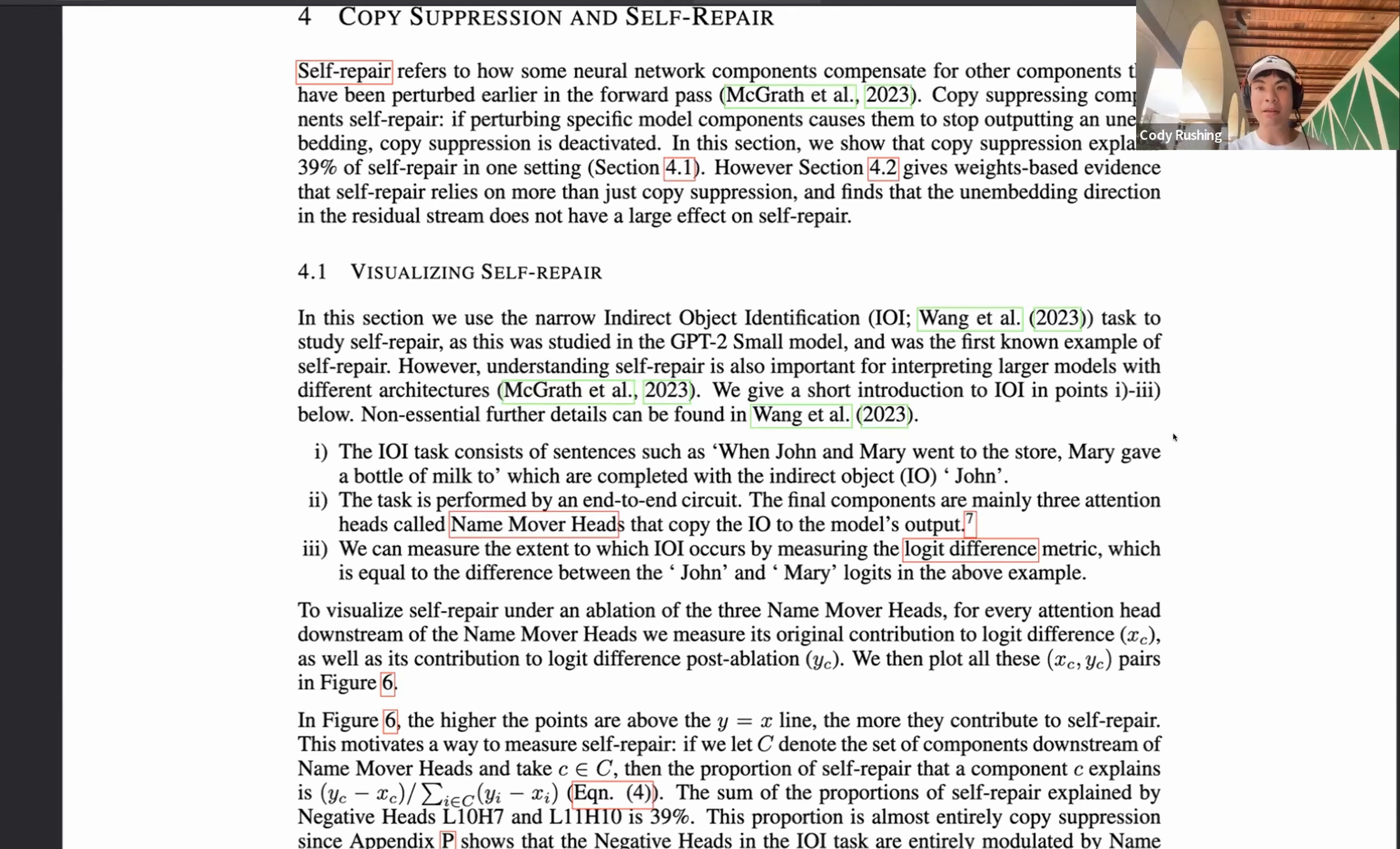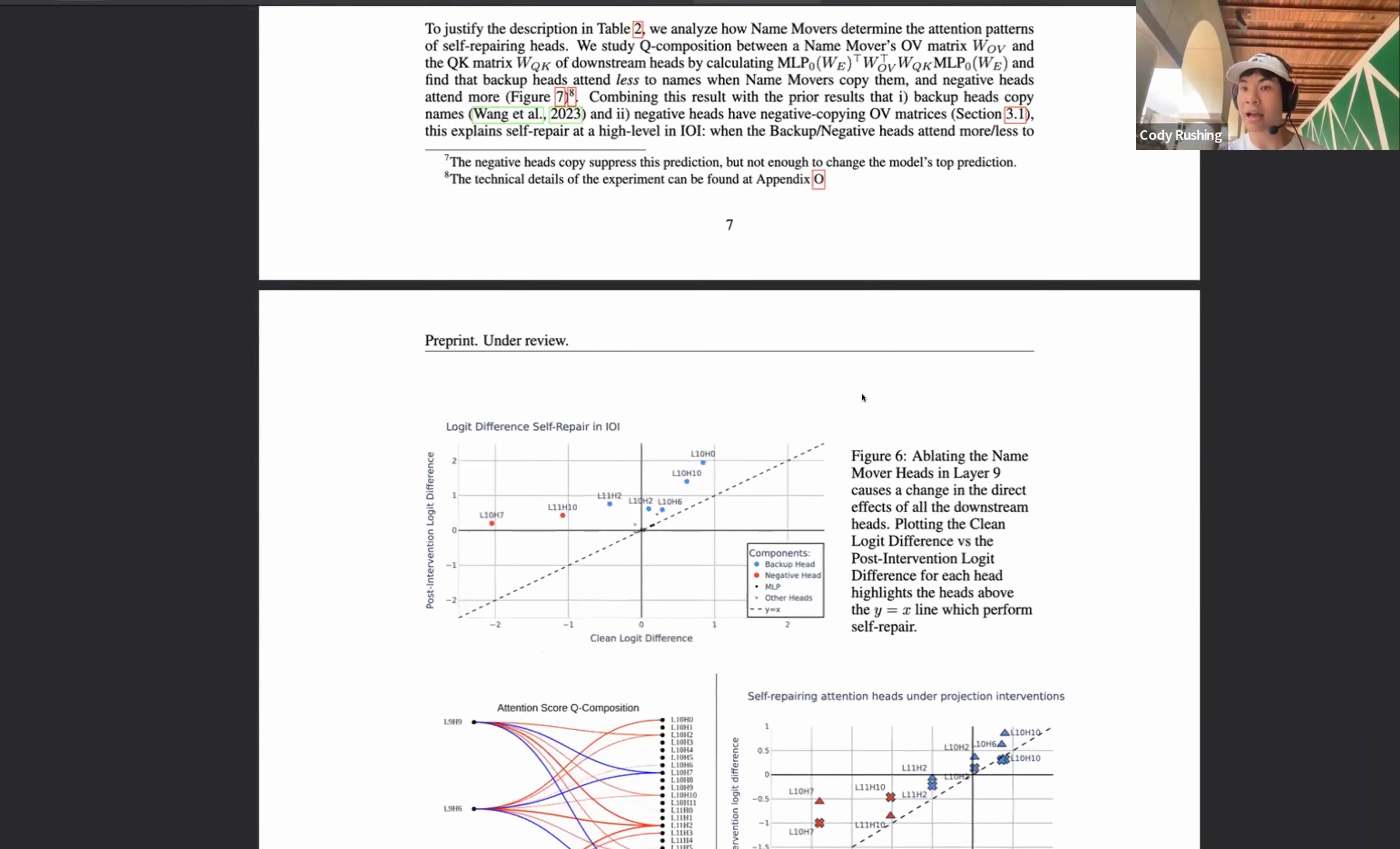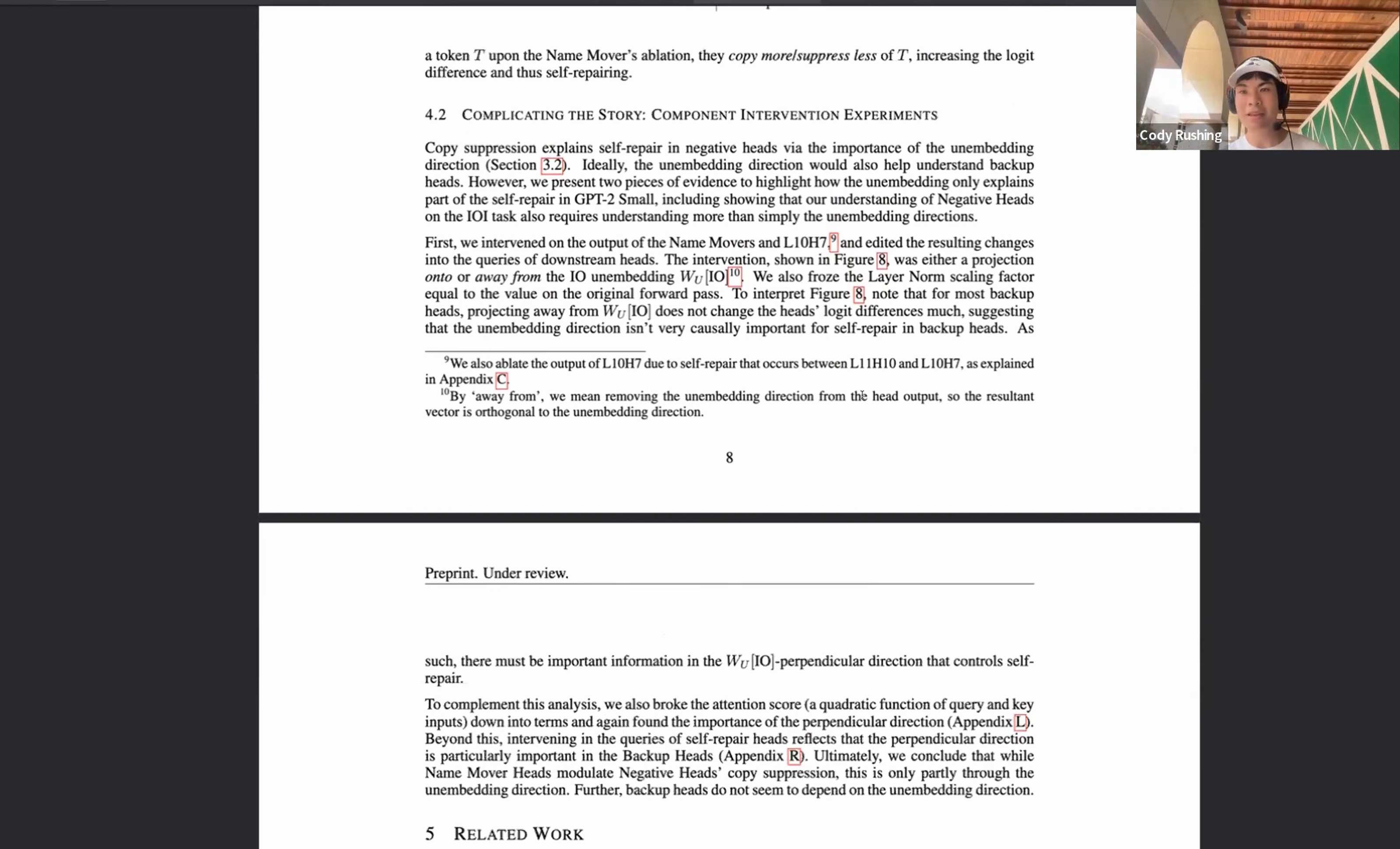where if you ablate a component in a large language model, within these same four tests, the model will compensate for this ablation and the loss on an example will not decrease as much as you might expect. This whole entire section is trying to use copy suppression as a case study of self-repair, because if you get rid of copying, well, then you don't need to do copy suppression.